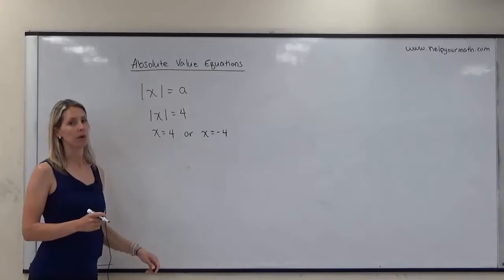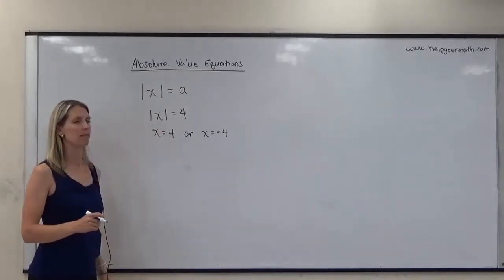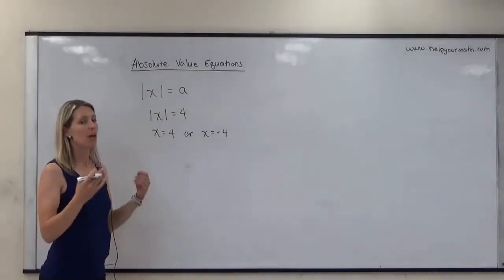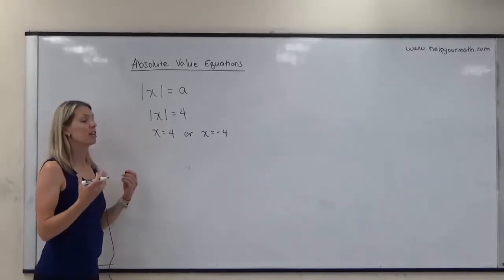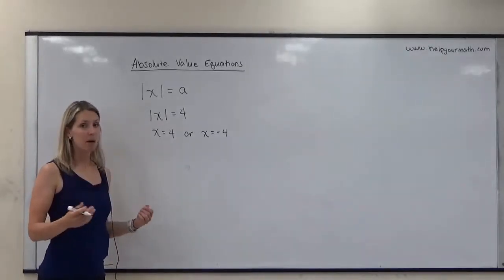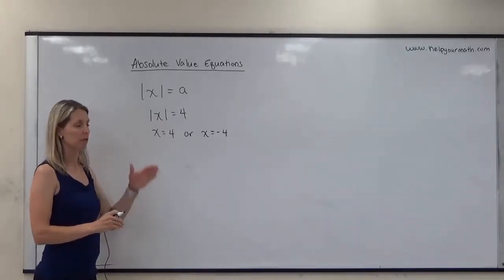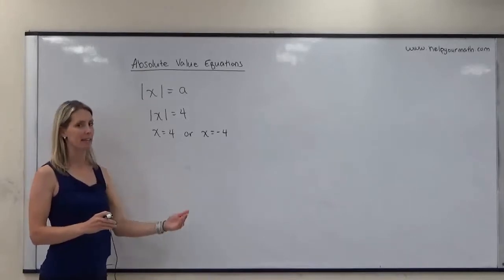Or if we plug in negative 4 for x, we get the absolute value of negative 4 is equal to 4, which is also true. So with absolute value equations, it is very common to have two solutions — we look at both the positive case and the negative case.